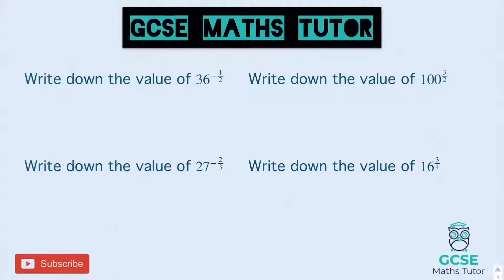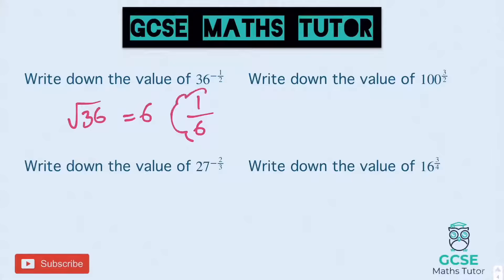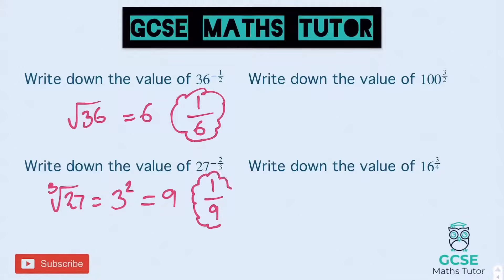So 36 to the power of negative 1 half. There is a negative so it's going to flip, and there's a 2 on the bottom. First I'll do the square root of 36, which is 6, and then flip it over — so 1 over 6 is our final answer. Onto the one below: 27 to the negative 2 thirds — it's going to flip, cube root on the bottom, and a 2 on top so it's going to square as well. Cube root of 27 is 3, then square that to get 9, then flip it over — so 1 over 9.